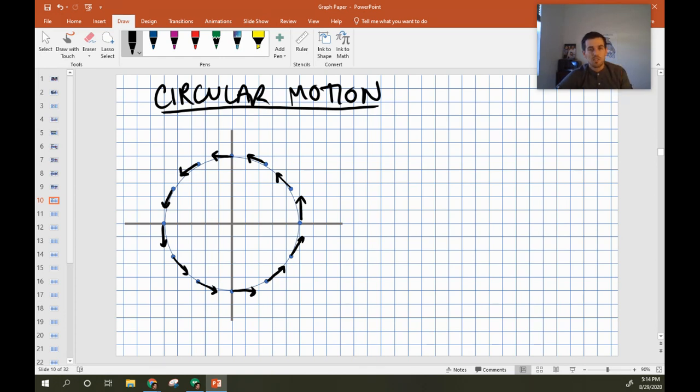And if whatever is making it turn stopped, it would just fly off in that straight line. So I've got these velocity vectors, and I'm hoping you can observe right now that as we go around this circle, while the length of my vectors aren't changing, as I go, the direction changes for each one.